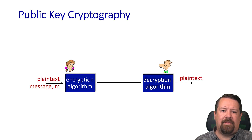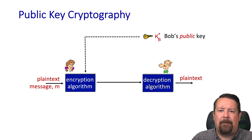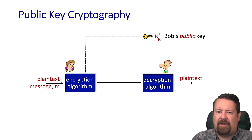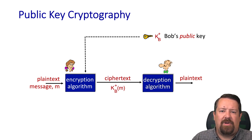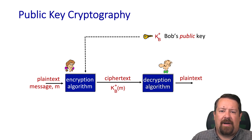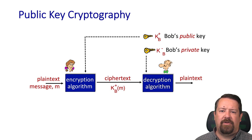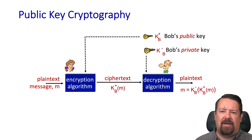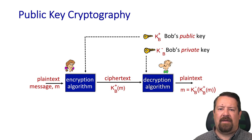Alice sends her plaintext message and the encryption algorithm takes Bob's public key as input. Alice looks up Bob's public key — because it's public, it could be on Bob's website or in some database of public keys where anyone can find it and encrypt a message to Bob. The resulting ciphertext is the message encrypted using Bob's public key. The input to the decryption algorithm is Bob's private key, so we're using separate keys on each end. The message encrypted by the public key and then processed by the private key yields the original plaintext message.